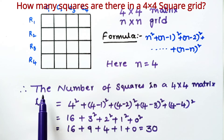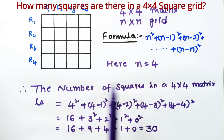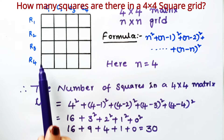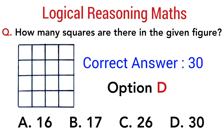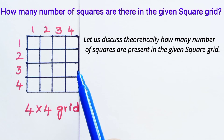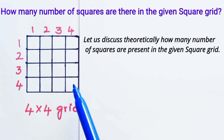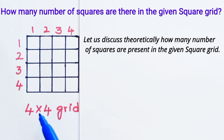So, how many squares are present in a 4×4 square grid matrix? There are totally 30 squares. The correct answer is Option D: 30. Now let us verify this theoretically by counting how many squares are present in a 4×4 square grid.